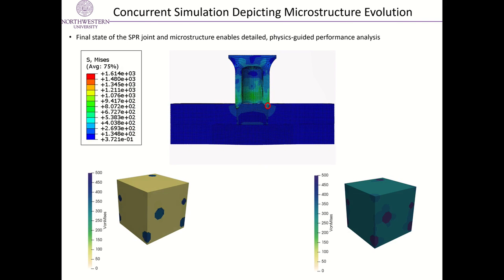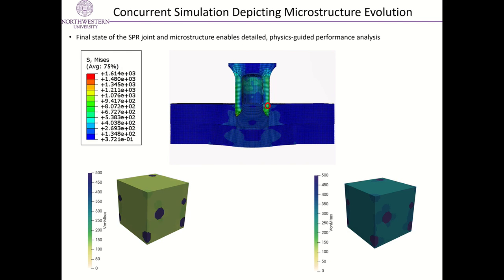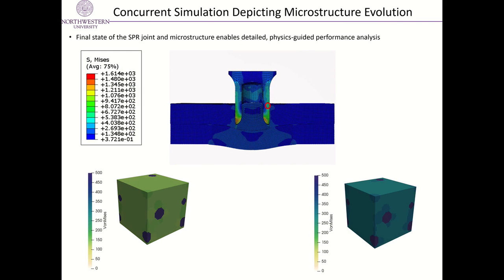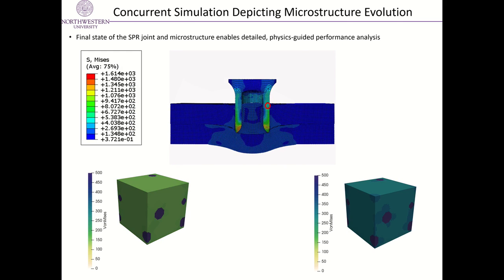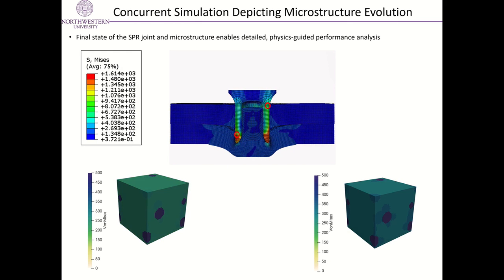Here we plot the Mises stress evolution in the two scales concurrently. The top circle corresponds to the initial position of the RVE on the right and fails within the first few frames. The bottom circle corresponds to the RVE on the left; it fails as the rivet begins to penetrate the second plate.